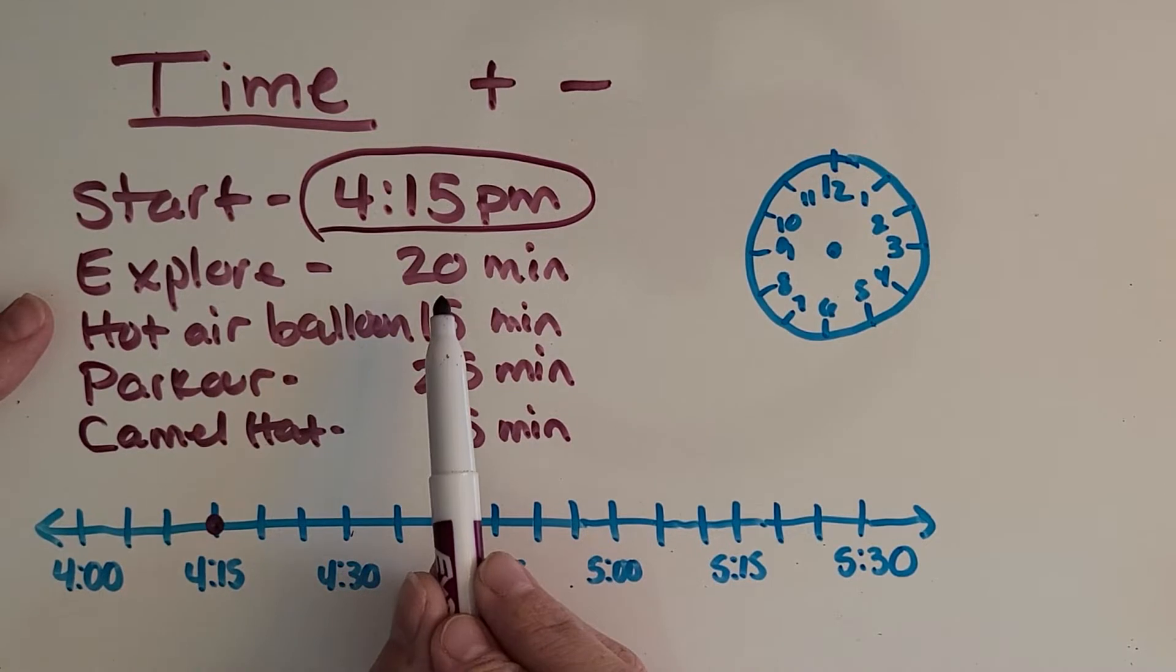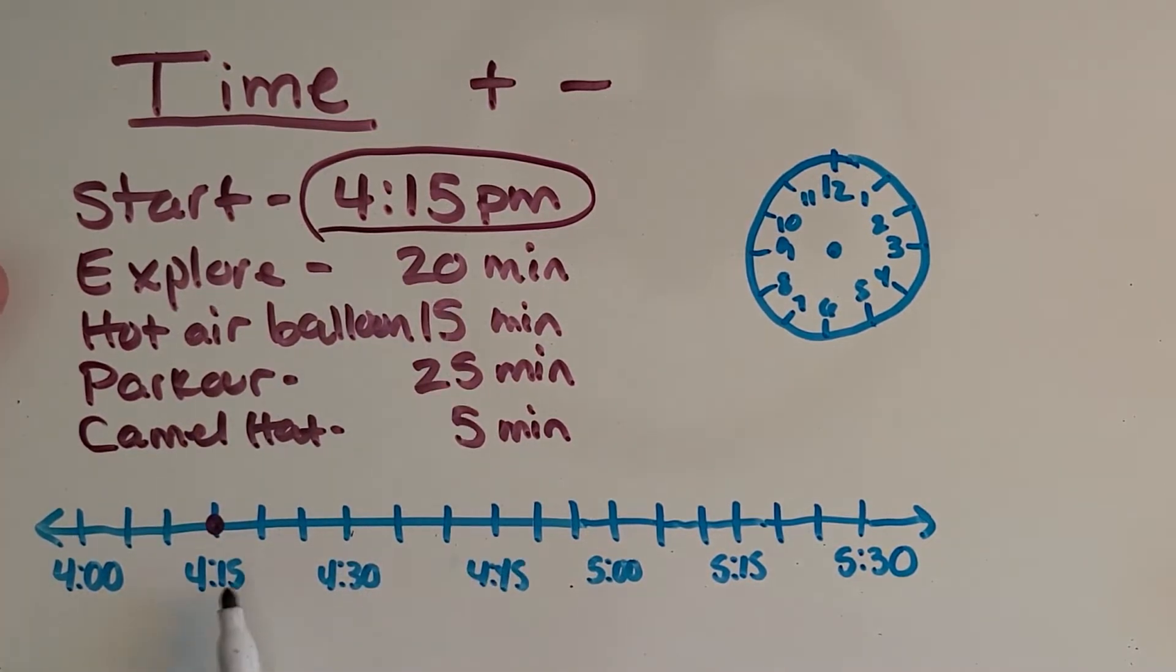4:15 is when I started. So now each event that I do I'm going to be counting forward more time until I end up with a certain time. So one thing to keep track of is anytime you look at a number line, it's really important to first study it and see what is it counting by. So I want you to take a second, see what you think. Here's four o'clock, 4:15. It takes three jumps to get to each point that I labeled.